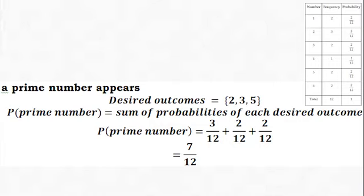Let's now find the probability that a prime number appears. The prime numbers are 2, 3, and 5. Therefore, the probability of a prime number appearing is equal to the sum of the probabilities of each prime number. So, probability of a prime number is equal to 3 out of 12 plus 2 out of 12 plus 2 out of 12, giving us 7 out of 12.